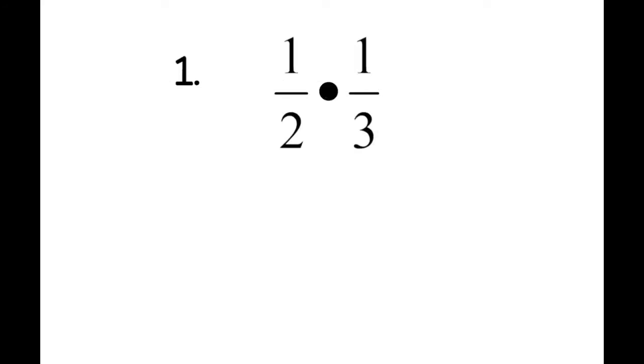Example 1: We have 1 half times 1 third, and this is going to look just like it would have in probably 4th or 5th grade when you started learning about basic fractions. You take your numerators and do 1 times 1 is 1, and 2 times 3 is 6. 1 sixth. Can that be reduced? It cannot, so I circle it, and 1 sixth is my correct answer.